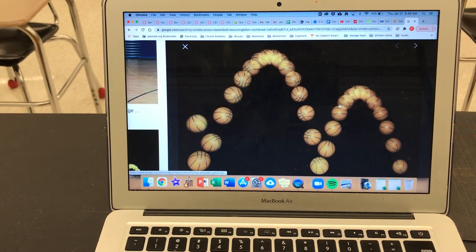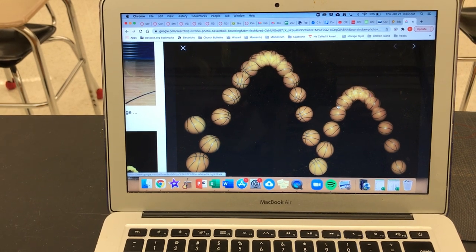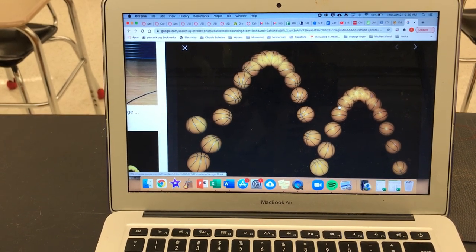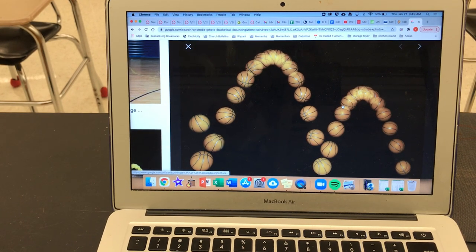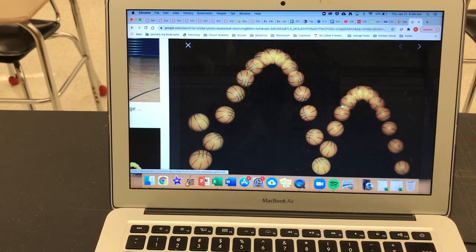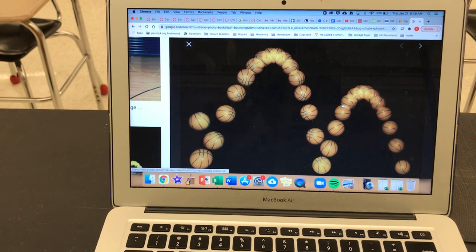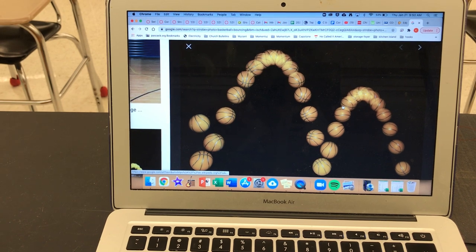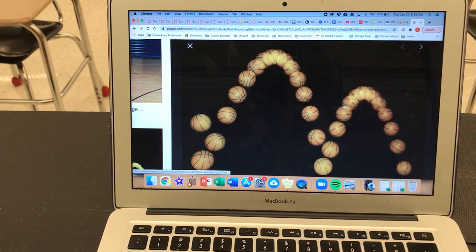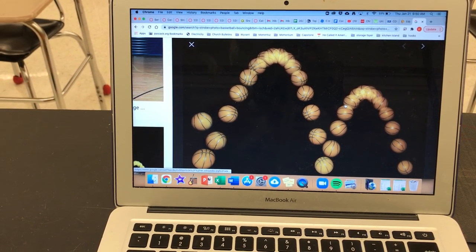But what you could do is you could take a strobe light while the ball is bouncing. And every time the strobe light flashes, the camera will see a picture of the ball. So you could set the strobe light to flash every tenth of a second. So every second you'd get ten pictures of the ball. When you print the picture, it would look like this, which looks like what we did with the rubber stoppers the other day.